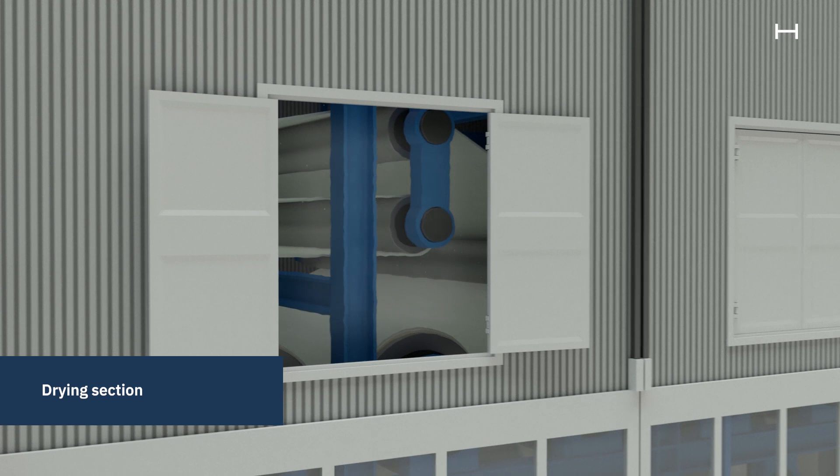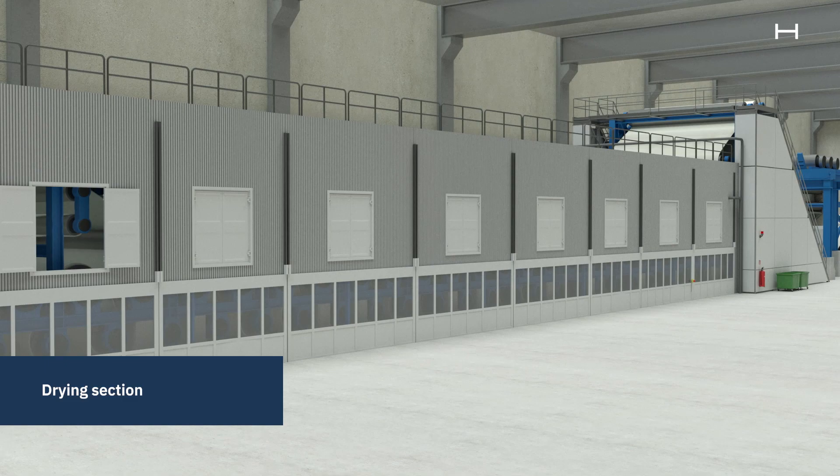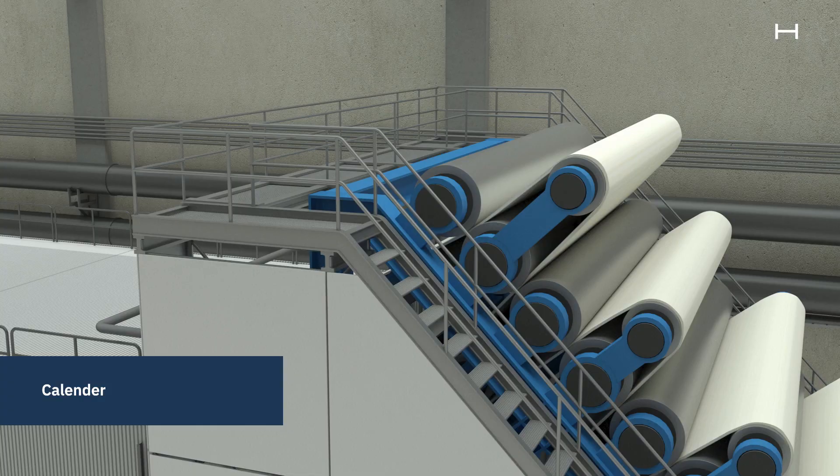After the dryer, the paper has reached its final moisture content of about 7-8%. But the paper has a rough surface and the profile across the machine is not optimized. To optimize the paper quality after the drying section, the paper gets to the calendar.